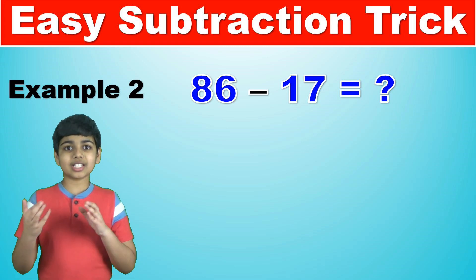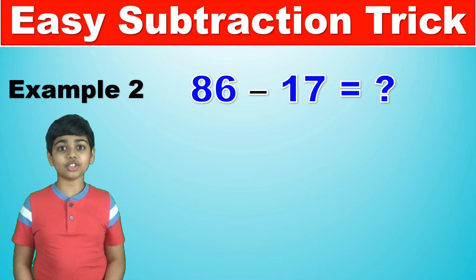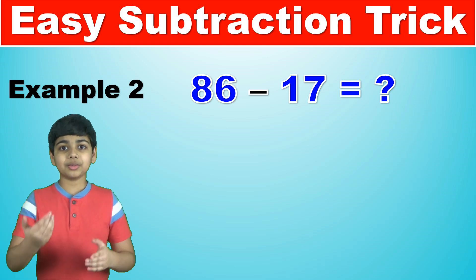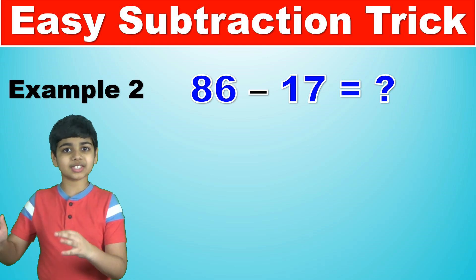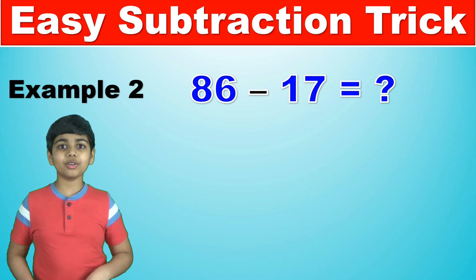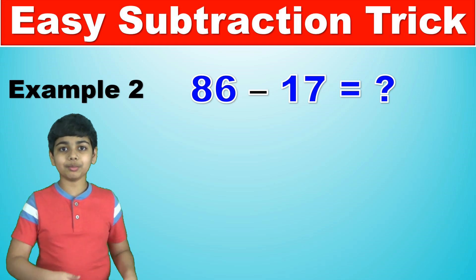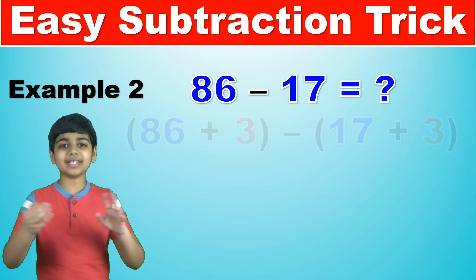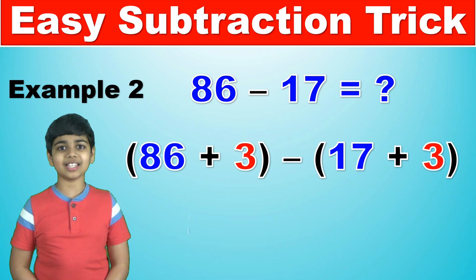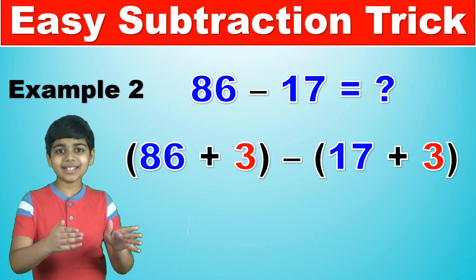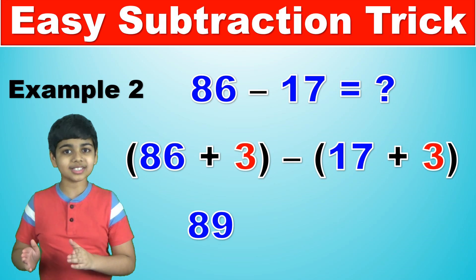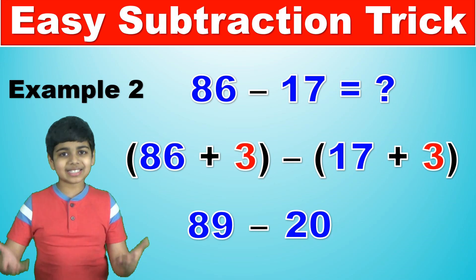And 17 and 20, the difference is just 3. So we have 17 plus 3 on this side, which is 20. Now we add 3 to the other number, 86. So 86 plus 3, which is 89. And now we have 89 minus 20, which is equal to 69.